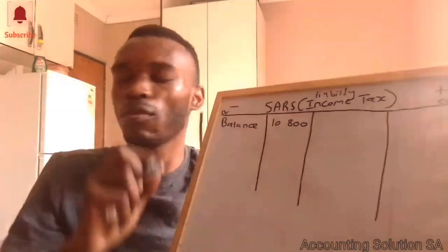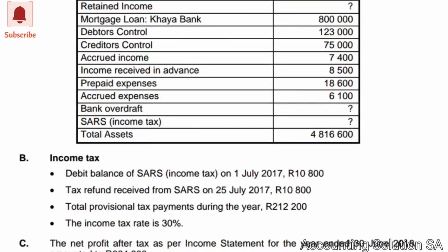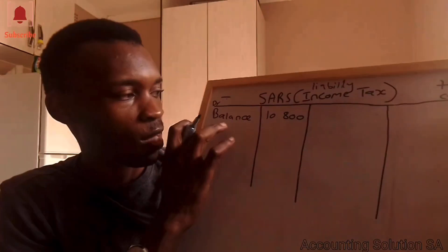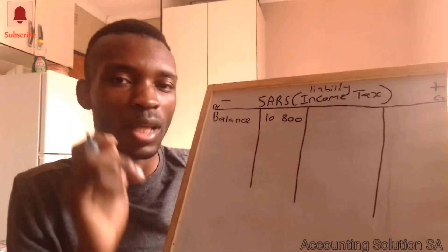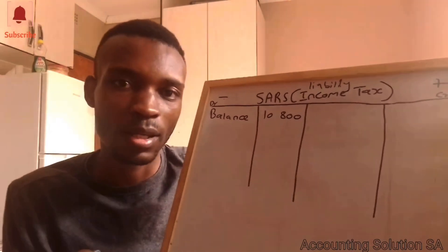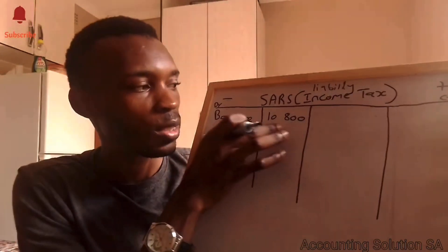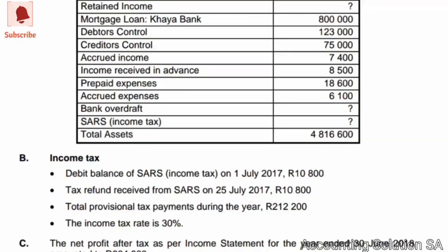Next, a tax refund received from SARS on 25 July 2017 is 10,800. Do we need to record that 10,800 again? No. The reason we have a debit balance is because SARS owed us as a company, meaning the amount they owed us was refunded on 25 July 2017. Recording it again would result in a double amount, which is incorrect.